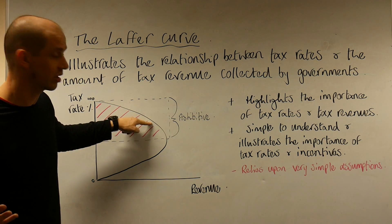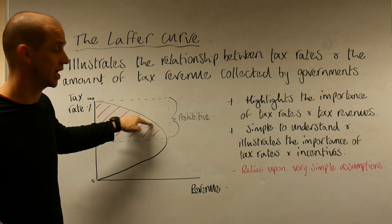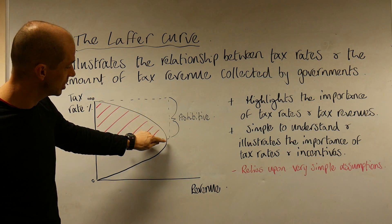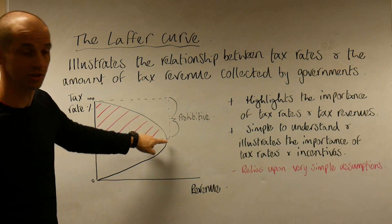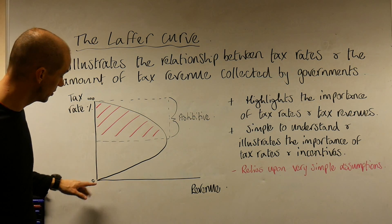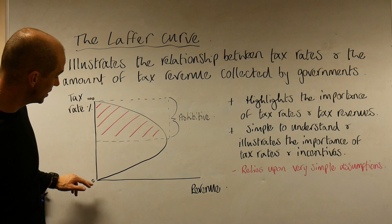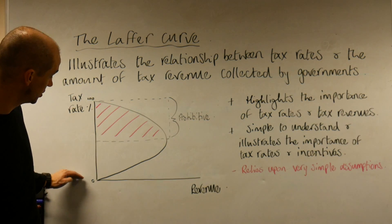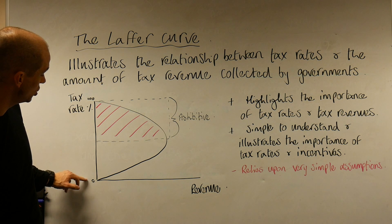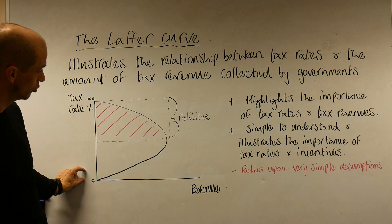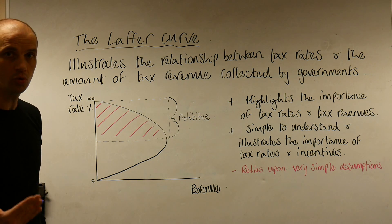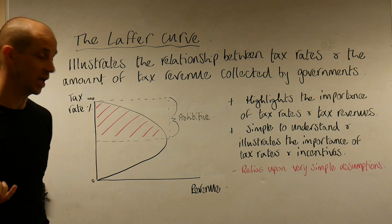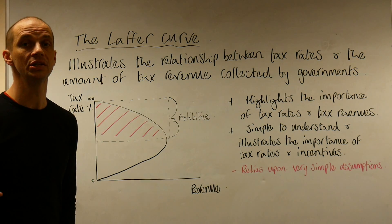So tax revenue earned by the government would increase through those tax cuts, all the way down to the peak point. At the lowest spectrum, we can also see how tax revenue greatly increases as tax is raised just a little bit — a small increase in tax really does bring about a big increase in the amount of tax revenue generated.